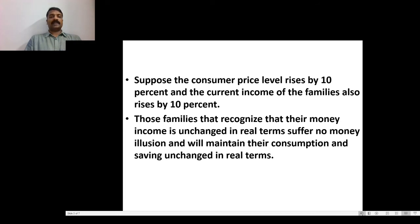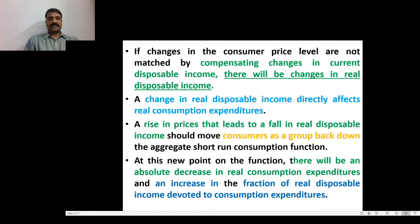But then if the price level rises by 10 percent and the current income of the family also rises by 10 percent, the family recognizes that their money income is unchanged in real terms — they suffer no money illusion. They realize their money income is unchanged in real terms, so they are free from money illusion and maintain their consumption and saving unchanged in real terms. If changes in consumer price level are not matched by compensating changes in current disposable income, there will be changes in real disposable income.